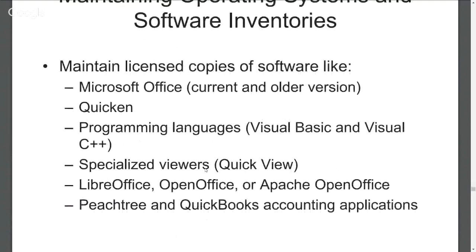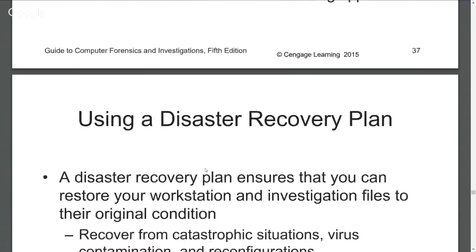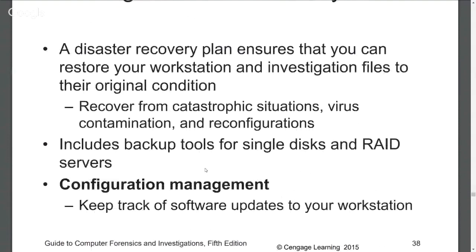License copies you'll want include Office, Quicken, and programming languages. Viewers like Visual Basic, Specialized Viewers, QuickView, LibreOffice, OpenOffice, and Apache OpenOffice are your free office options. Peachtree and QuickBooks — if you remember from the crime statistics, some cases involved embezzlement, so Quicken, QuickBooks, and Peachtree are accounting applications you may need licenses for. You can't use the company that's asking you to do the investigation's license, because there may be corruption involved — go outside of that.